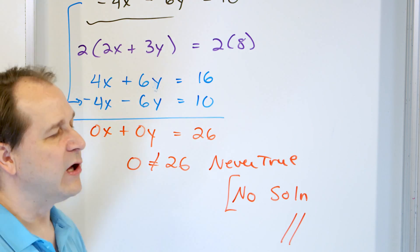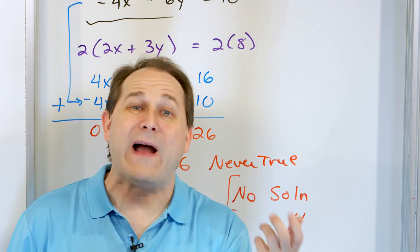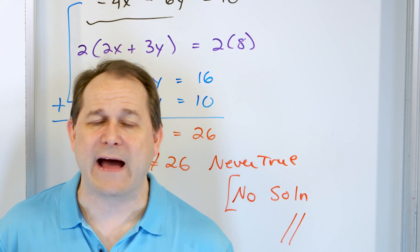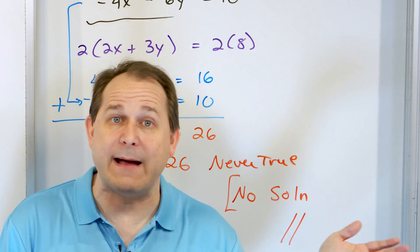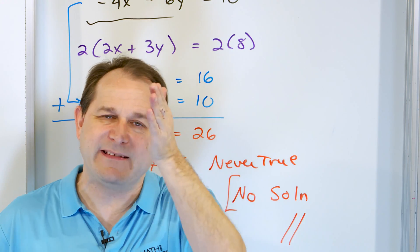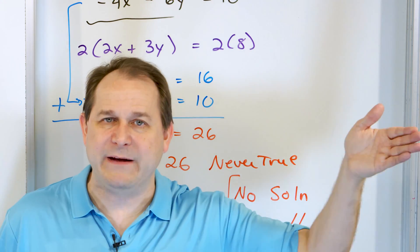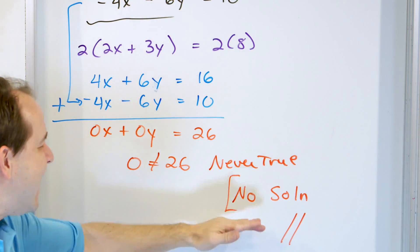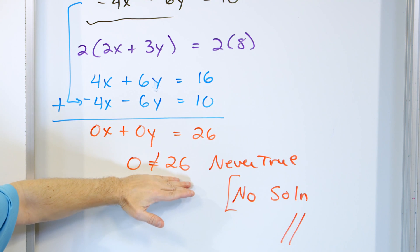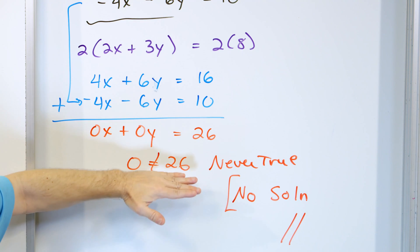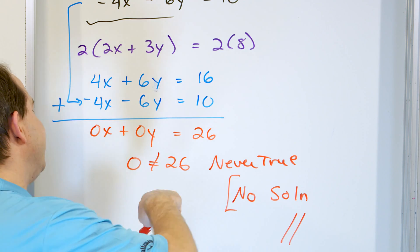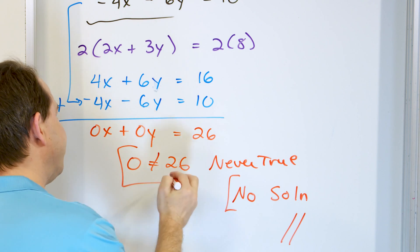If you were to graph the first line and the second line, you would find that they have the same slope — I encourage you to do that. Go ahead and plot both of them, put them into mx plus b form, and you'll find they are parallel. That is why they have no solution, and the way this falls out in the elimination technique is that you'll get an answer that can never be true.